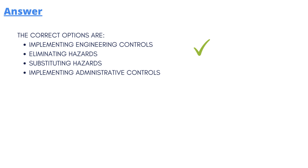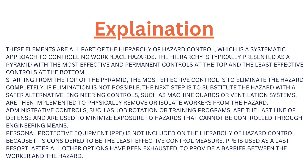The correct answers are: implementing engineering controls, eliminating hazards, substituting hazards, and implementing administrative controls. To explain further, these elements are all part of the hierarchy of hazard control, which is a systematic approach to controlling workplace hazards. The hierarchy is typically presented as a pyramid, with the most effective and permanent controls at the top and the least effective at the bottom.